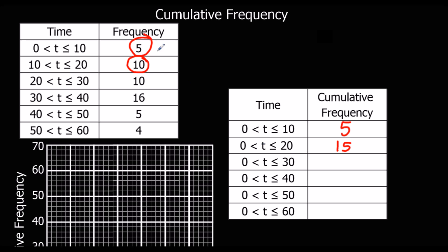Then up to 30 is all three of these, so we're adding on another 10, so 25. Then up to 40, add on the 16, so that makes it 41. Up to 50, add on the next one, 46. And add on the last one to 50. So that's cumulative frequency, adding up as we go along. That's our running total.